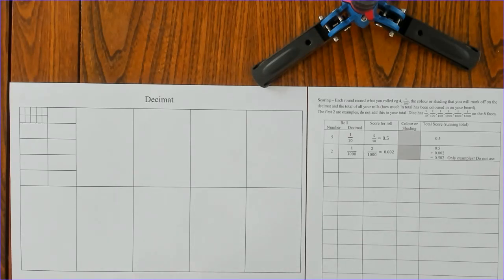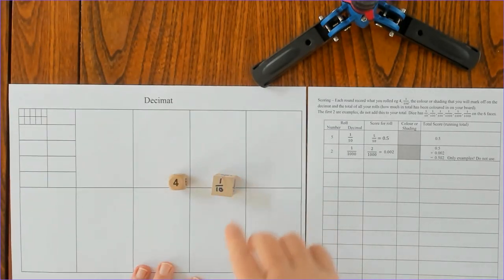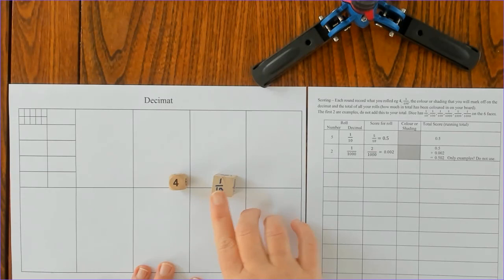Welcome, this is a short video on how to play the Decimat game. You'll need a six-sided dice and you'll need some sort of dice that's been modified or created.